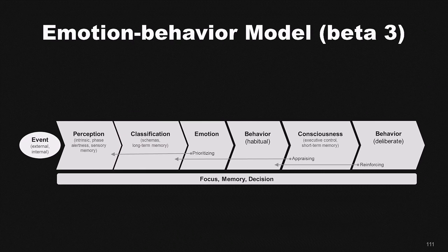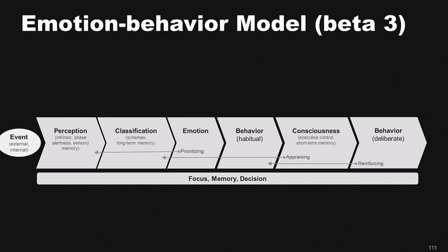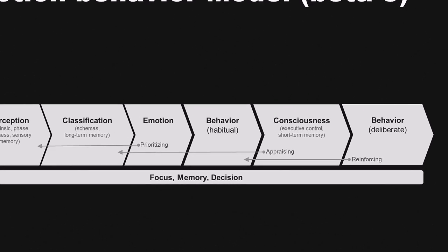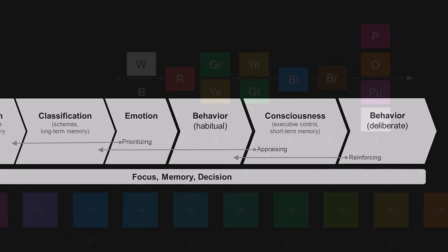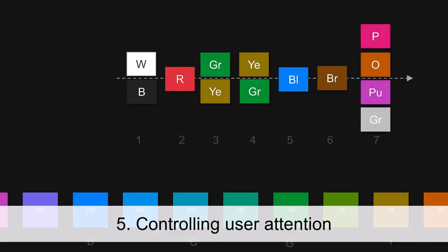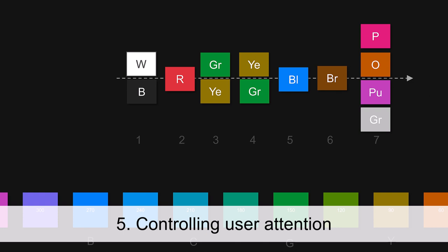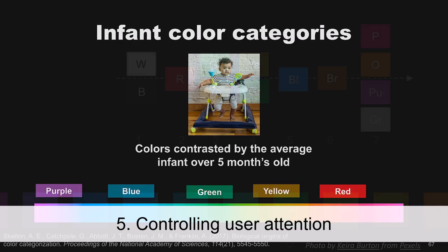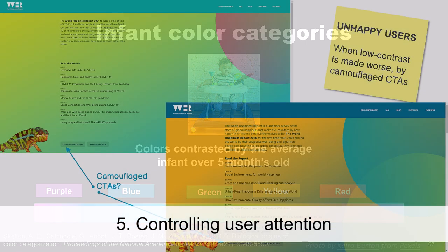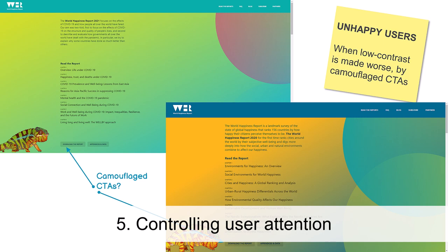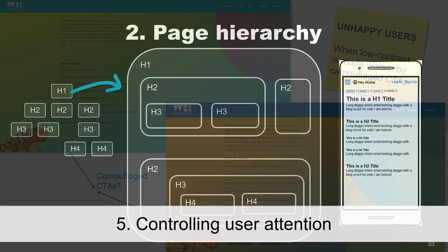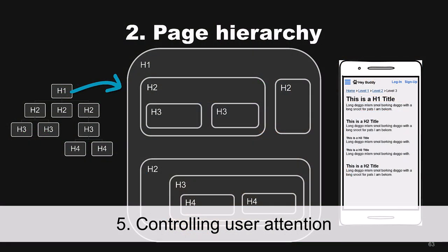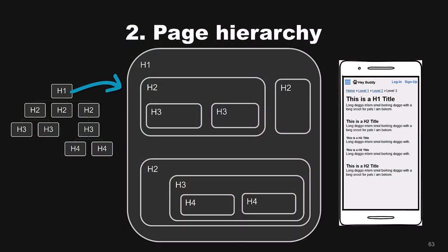From this point forward, we're going to follow through the emotion-behavior model. We're going to start off by looking at how we use color to control what people focus on and what they don't notice. This will be about how we design for salience and come up with visual hierarchies that control what people notice.